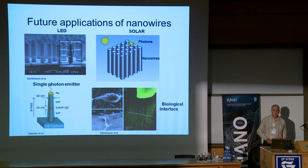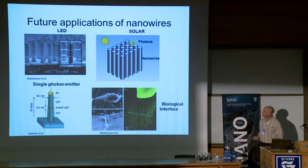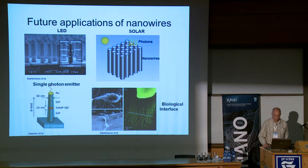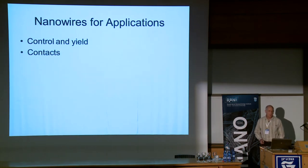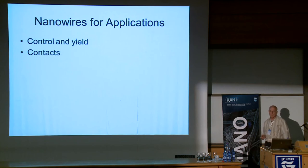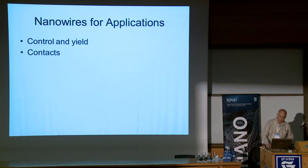Applications are in the field of solar energy - many groups are working on solar cells using nanowires. Also detectors, LEDs, single photon emitters, and some biological interface applications. But if we really want applications, we have to control the growth, and that's the most difficult problem. That's why we've been struggling for almost three years just to get initial control of the most basic and simple system of indium phosphide on indium phosphide. And of course the second step is the contacts - how do we contact this if we want to do any electronics or optoelectronics with these nanowires?